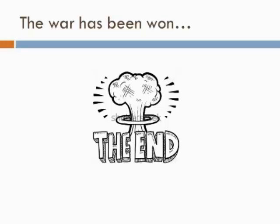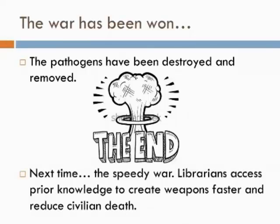So that's it — the war has been won. Enough antibodies, enough weapons have been produced, and the phagocytes — all of the cleanup trucks — have done their jobs to remove the pathogen from the streets of the country. However, the next time this happens it will be a much speedier war. The librarians, the B cell and T cell memory cells, have access to all the information they've already stored and are able to create the antibodies much faster, reducing the overall civilian death — the number of body cells damaged in this war. I hope that has explained the immune response in a slightly different way and perhaps will help you remember the different jobs of the immune cells.